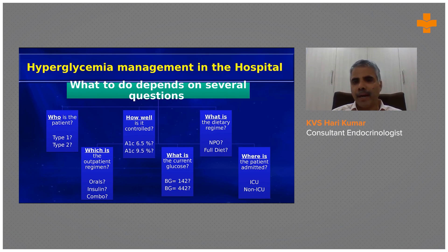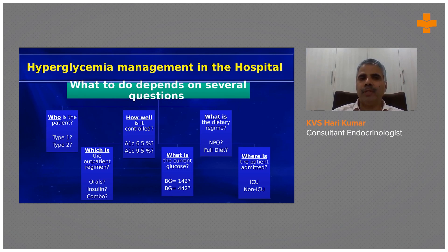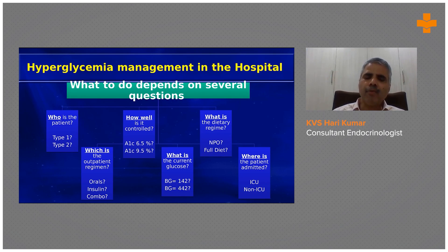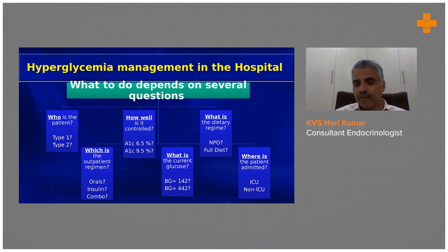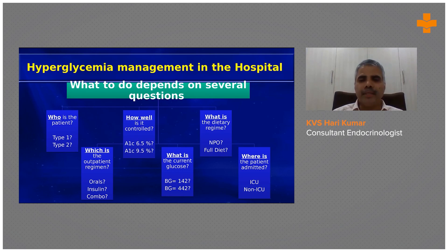If the patient is a known diabetic, how well was it controlled before? Good prior control may need only mild dose adjustments, whereas poor prior control requires further consideration. What was the outpatient regimen — insulin or tablets? What is the current glucose level? A value of 100 requires a different approach than 500. Is the patient able to take medication orally or is he on a continuous drip?